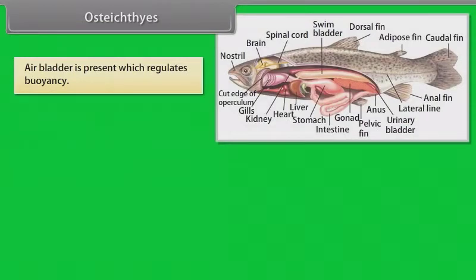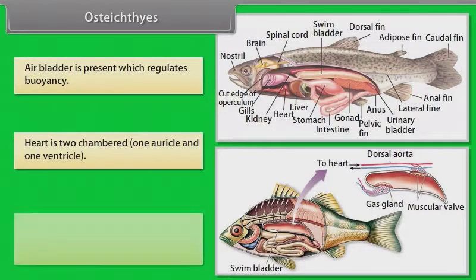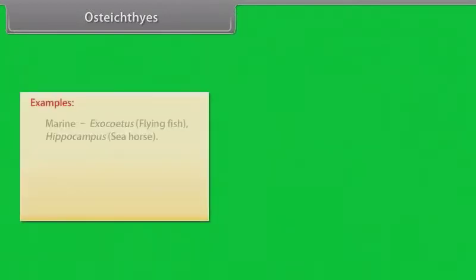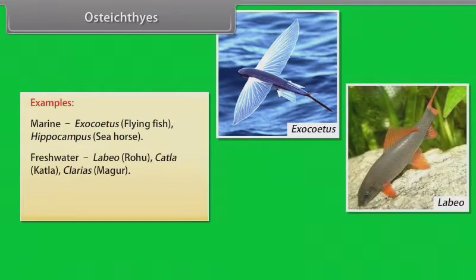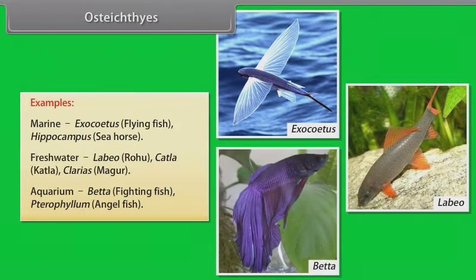Air bladder is present, which regulates buoyancy. Heart is two-chambered — one auricle and one ventricle. Fertilization is usually external. Sexes are separate. They are mostly oviparous and development is direct. Examples — Marine: Exocoetus (Flying Fish), Hippocampus (Sea Horse). Freshwater: Labeo (Rohu), Catla. Aquarium: Betta (Fighting Fish), Pterophyllum (Angel Fish).